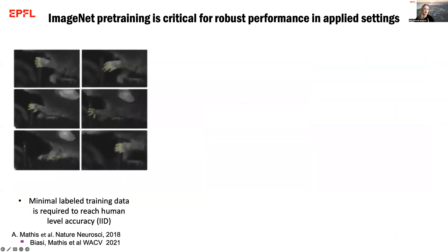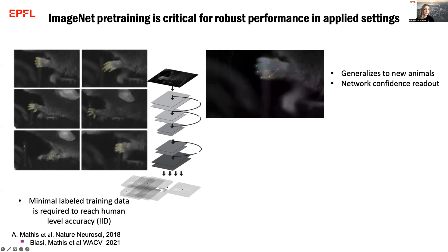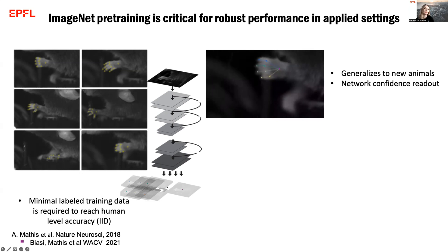We originally developed DeepLabCut to be able to build tailored, customized neural network architectures for use in the laboratory using very little input user data. One of our scientific contributions was to show that DeepLabCut required very little input human-labeled data for downstream supervised analysis of deep neural networks. We showed that as long as your data is so-called IID or in-domain, these networks can generalize to unseen animals and give you a confidence of their performance. This is largely due to our use of ImageNet pre-trained networks.